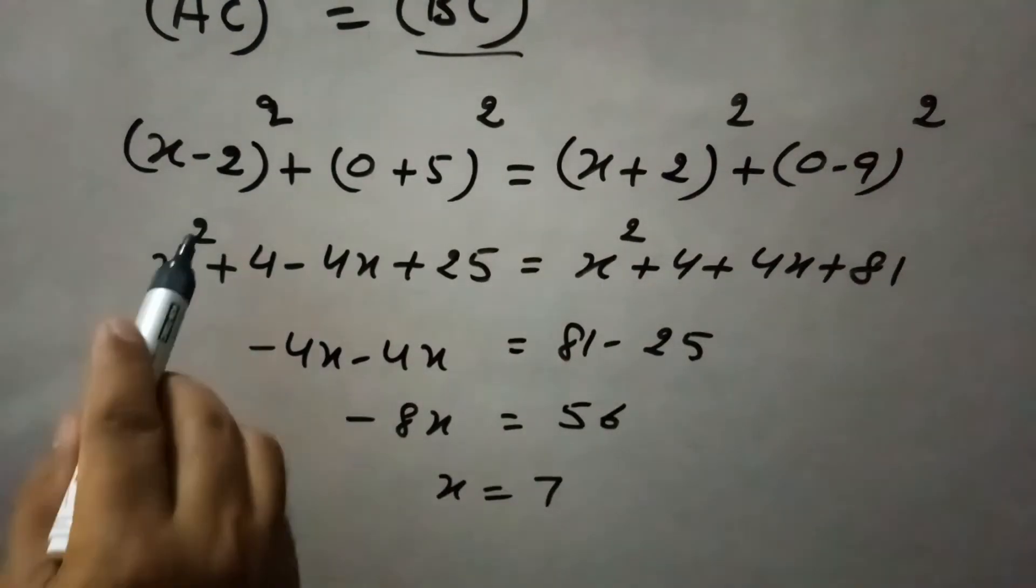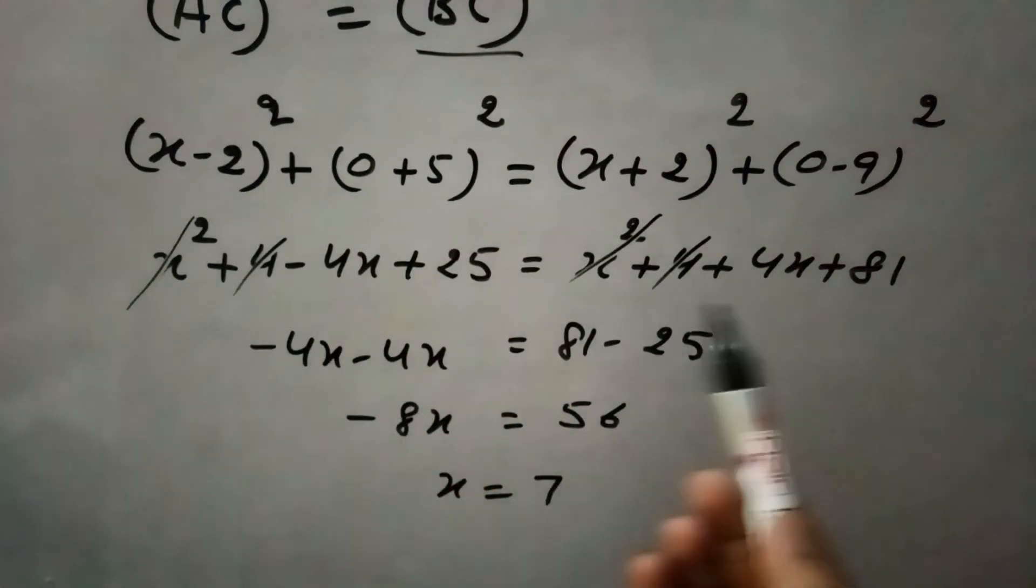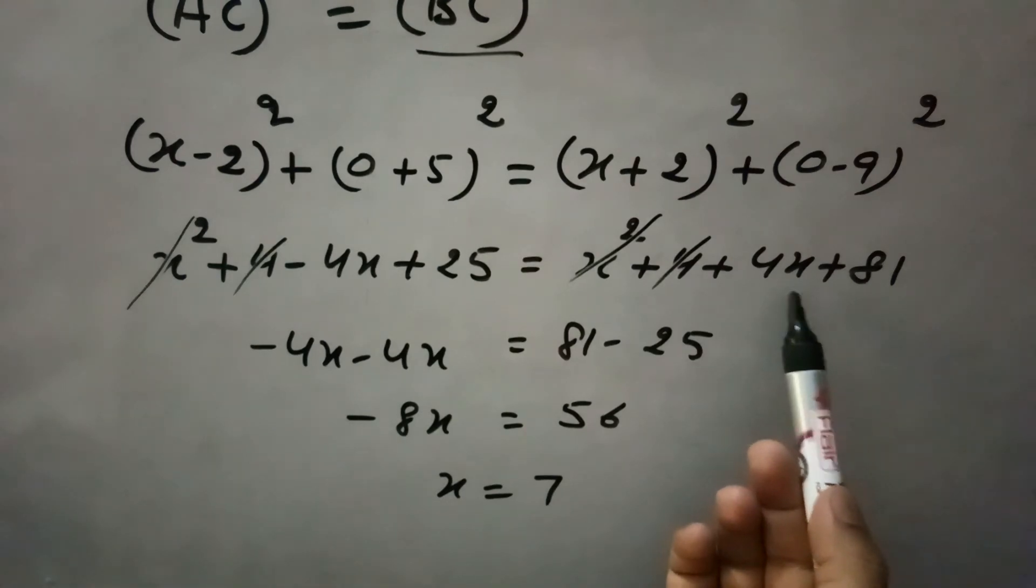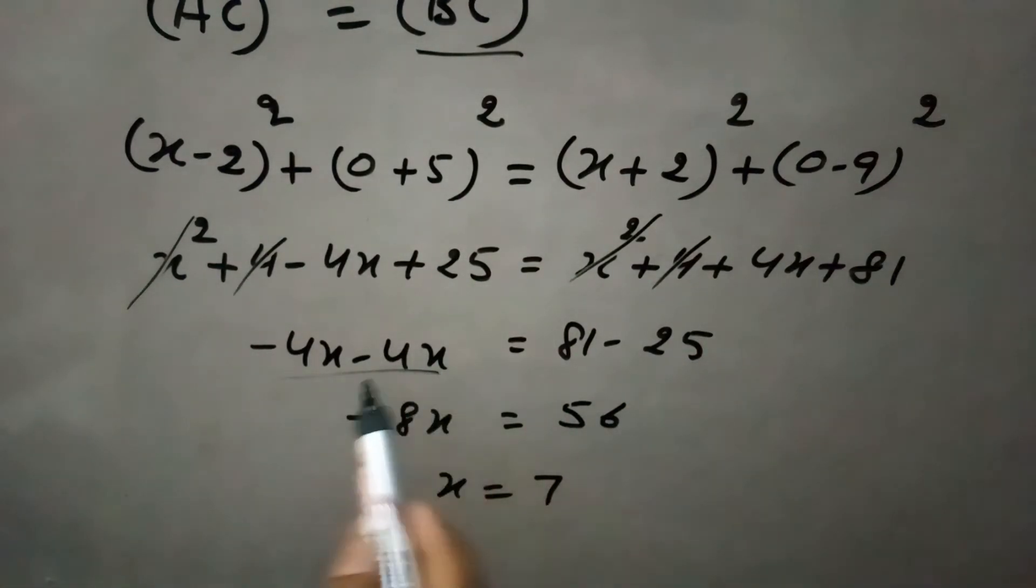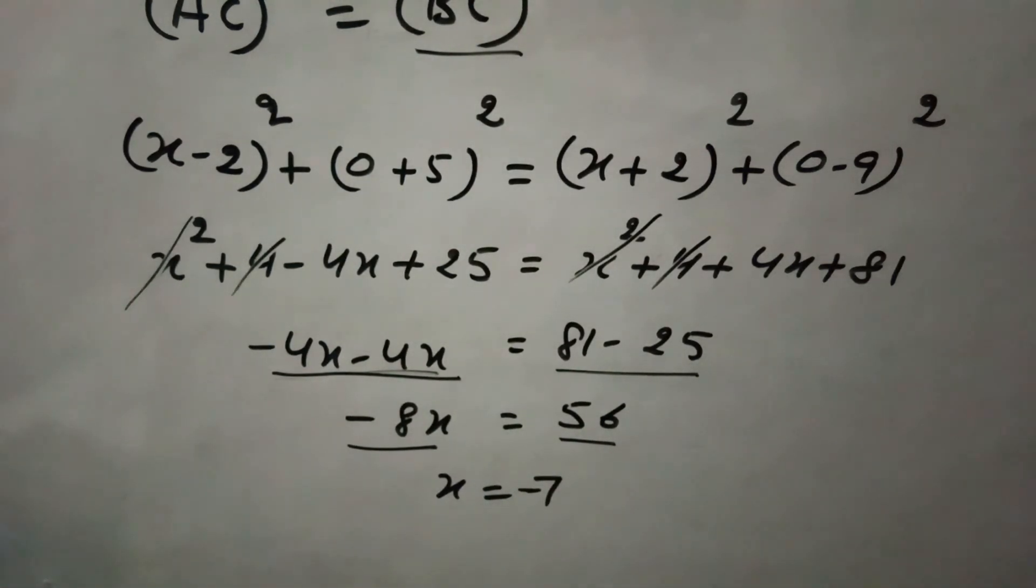So if you see here, x² and x² they cancel, 4 and 4 cancel each other. So -4 from this side and -4 of this, this +4 is coming to this side becomes -4. So -4 - 4 is -8. 81 and this 25 coming to that side, so 81 - 25 is 56. So here the value of x is -7.